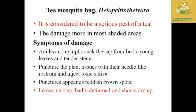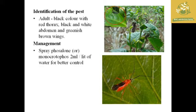The shoots dry up, and both nymph and adult suck the sap from the whole tea plant. It appears as a reddish-brown spot where the puncture occurs.